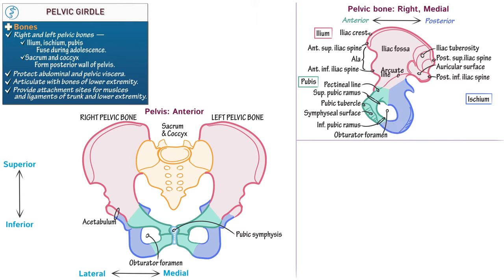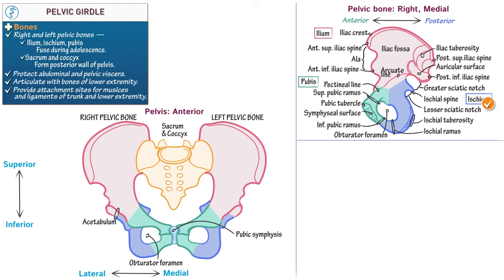Posteriorly, label the features of the ischium: the ischial spine, tuberosity, and ramus, which joins with the inferior pubic ramus. Identify the two notches created by the projection of the ischial spine. Superiorly, the greater sciatic notch, which is also bound by the posterior inferior iliac spine. Inferiorly, the lesser sciatic notch. Thick ligaments cross over these notches to create foramina through which neurovascular structures enter and exit the pelvis.